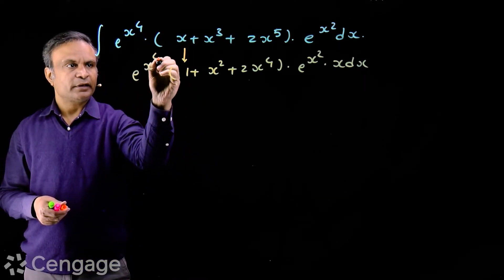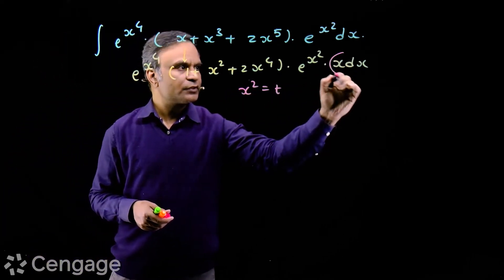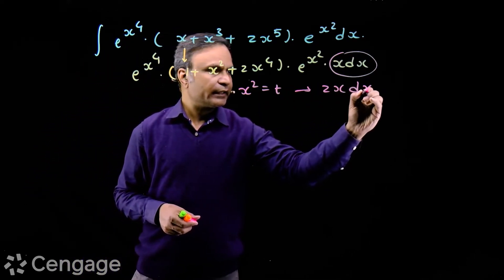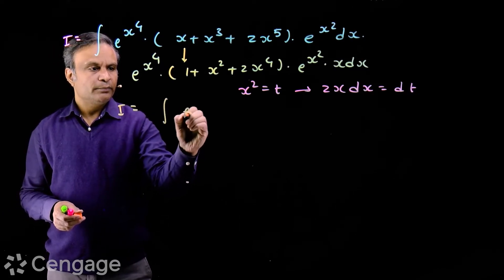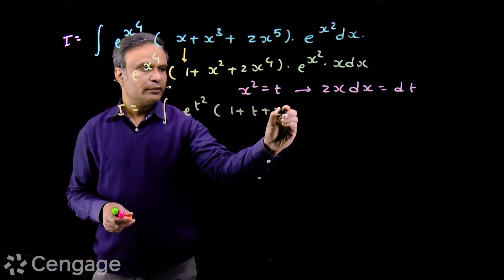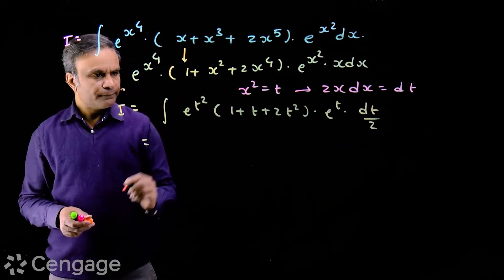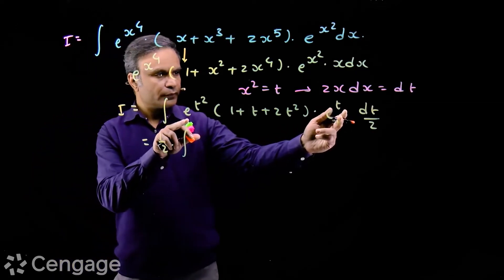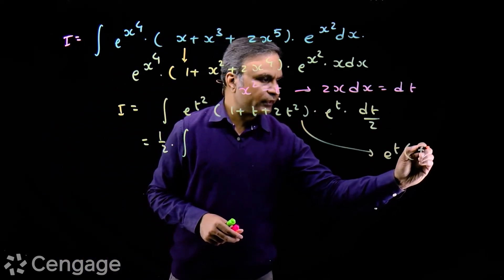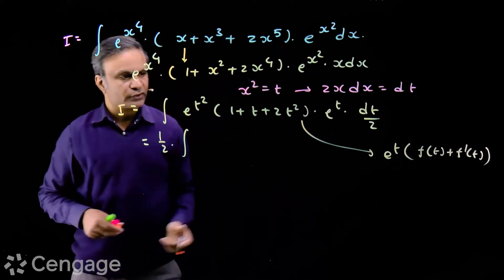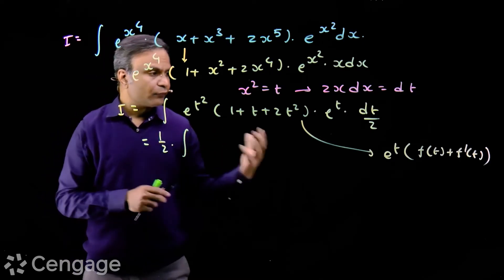We let x² = t, so 2x dx = dt, meaning x dx = dt/2. The integral becomes (1/2) × ∫e^(t²) × (1 + t + 2t²) × e^t dt. Our aim is to write the integrand as e^t × [f(t) + f'(t)], and we need to distribute e^(t²) smartly inside the bracket to identify f(t) and f'(t).